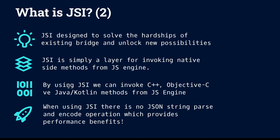By using JavaScript Interface, we can invoke C++, Objective-C, Java, or Kotlin methods from the JavaScript engine. When using JavaScript Interface, there is no JSON string parsing, encoding, or decoding. We are passing the actual data.